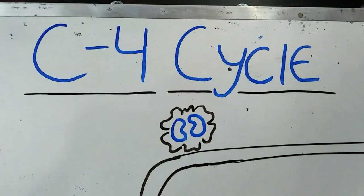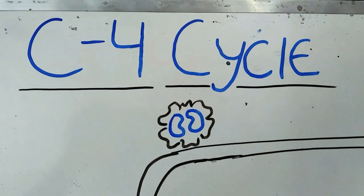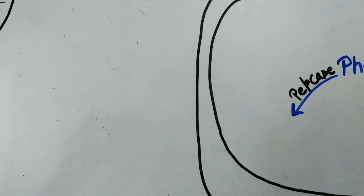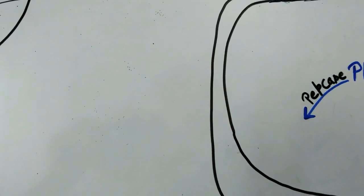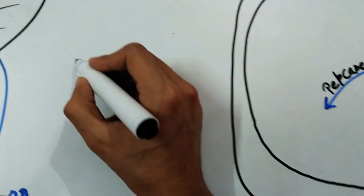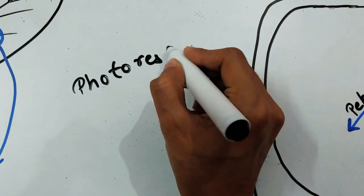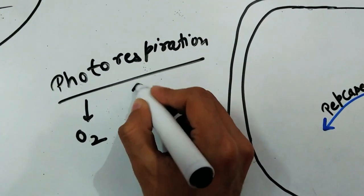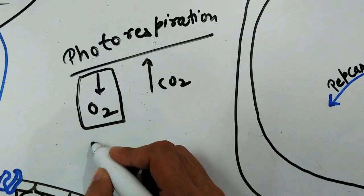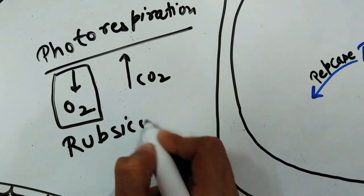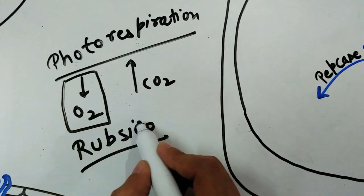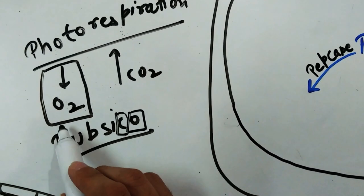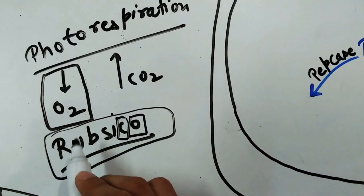In this lecture we will talk about the actual process of the C4 pathway, which was originally given by Hatch and Slack scientists. Before entering into the main cycle, I would like to remind you some important points. We talked about photorespiration — a process in which plants take in oxygen and give out carbon dioxide. The oxygen intake was facilitated by an enzyme called Rubisco, which has the dual property of binding with both carbon dioxide and oxygen. Rubisco is the most abundant protein found in our whole biosphere.